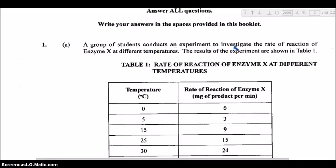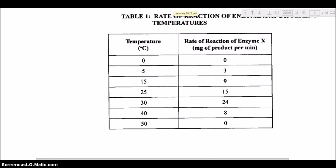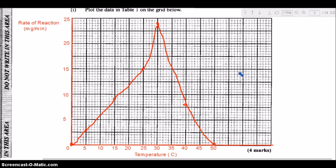A group of students conducts an experiment to investigate the rate of reaction of enzyme X at different temperatures. The results are shown in table one, with temperature values from 0 to 50 degrees Celsius, and the corresponding rate of reaction of enzyme X in milligrams of product per minute — showing how fast enzyme X converts substrate into product. The first part of the question asks to plot the data from table one on the grid.